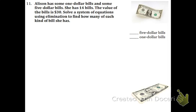Allison has some $1 bills and some $5 bills. She has 14 bills total and the value of the bills is $30. Write a system of equations, use elimination to solve it, and figure out how many of each type of bill she has. Let's define our variables first: x is going to be the number of $5 bills, and y is going to be the number of $1 bills.